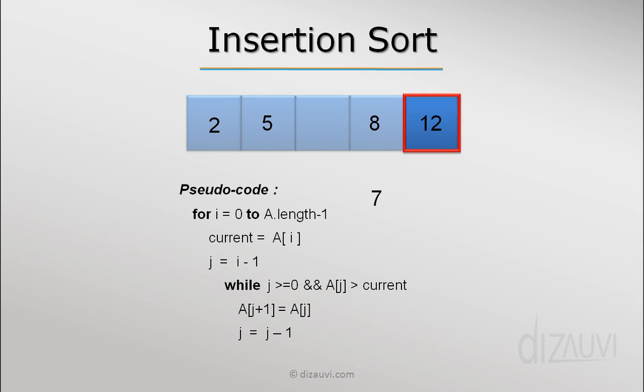Now the index j is pointing to element 5, and because 5 is less than 7, the while loop ends. What we need to do is put the current, which is 7, in the array slot with index j plus 1, because j after the while loop execution was pointing to element 5.